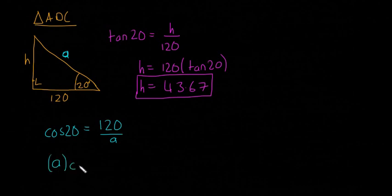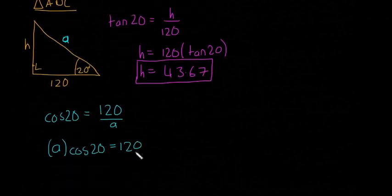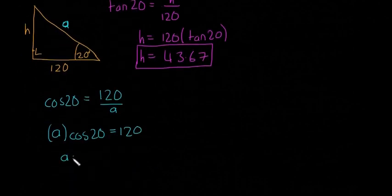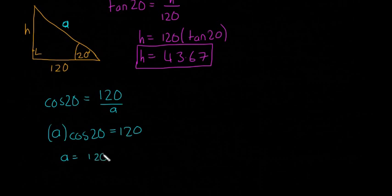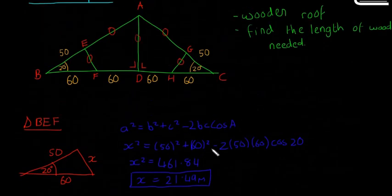And so I'm going to multiply everything by a. We're going to get a multiplied by cos(20) is equal to 120. Scroll down a little bit. Then we're going to get a is equal to 120 divided by cos(20), if we divide across by cos(20). Stick that into our calculator as well, and we're going to get 127.7 as our answer.